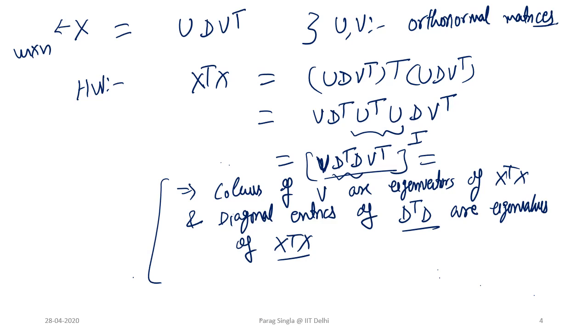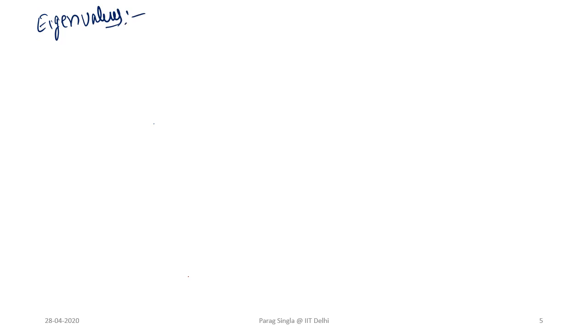We'll now move on to eigenfaces, which is an application of PCA to the specific task of finding components for image-related tasks, especially face recognition — projecting data onto a lower-dimensional subspace using PCA and then doing classification using the projected dimensions. Let me give a brief background on this idea of eigenfaces and then show some actual examples from a paper.